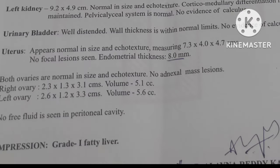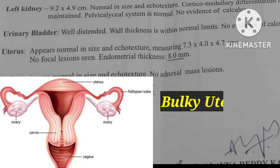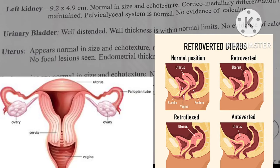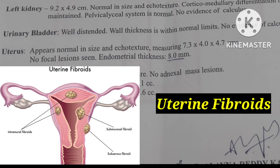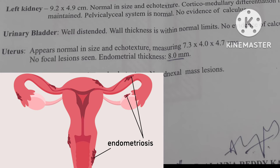Next comes the uterus. If it is normal, they mention normal. If the uterus size is increased, they mention 'bulky uterus.' The position of the uterus — anteverted or retroverted — is also noted; generally, an anteverted uterus is a normal condition. If there are fibroids, they mention uterine fibroids. Fibroids in the muscle tissue of the uterus are called mural fibroids. The report also mentions endometrial thickness — the endometrium being the lining of the uterus.